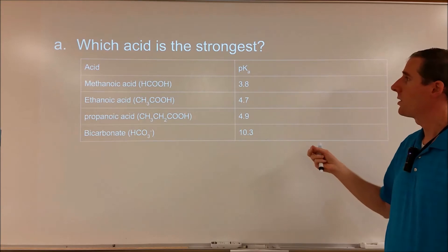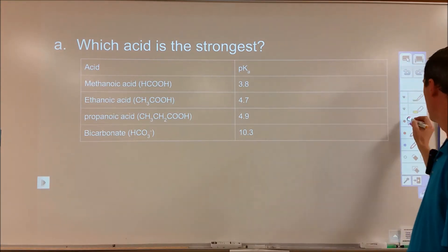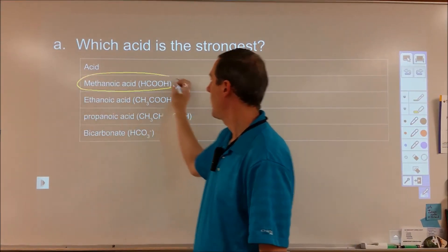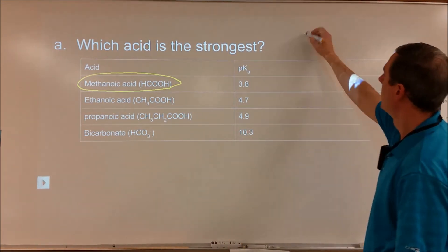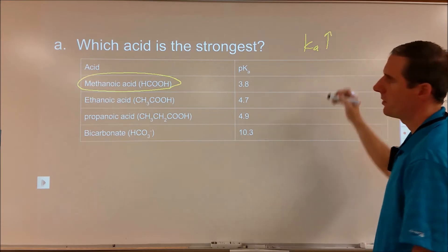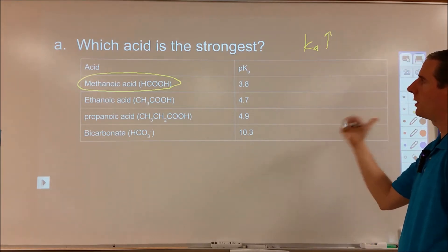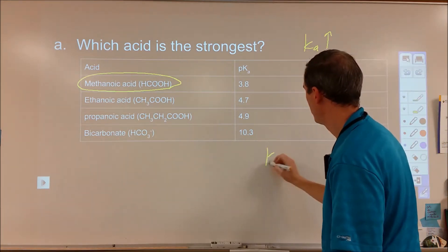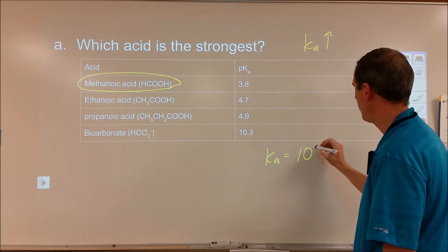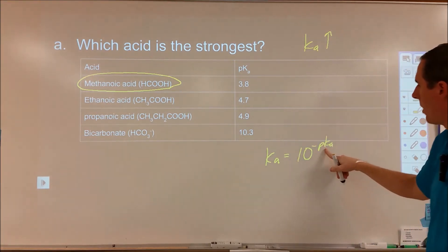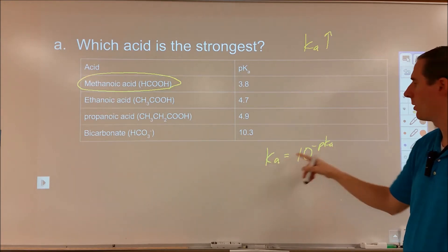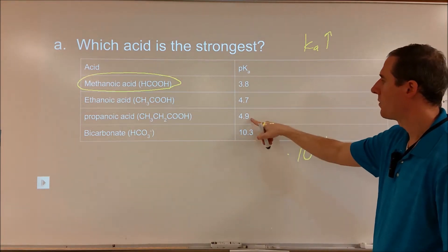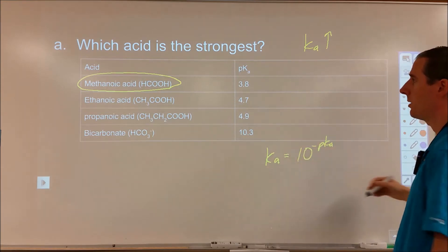Part A asks which acid is the strongest — it gives you four options to choose from. Whatever has the smallest pKa would be your strongest acid. In this case, that's methanoic acid. For Ka, the larger Ka is, the stronger your acid will be because you're shifting more to the right in your equilibrium expression. To find Ka from pKa, you do 10 to the negative pKa. So the smaller the pKa, the larger the Ka — we're looking at around 10 to the minus 4, as opposed to 10 to the minus 5 or 10 to the minus 10, which would be the weakest acid.